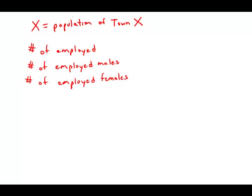In town X, 64% of the population are employed and 48% of the population are employed males. What percent of the employed people in the town are females? I'm going to write those percents as decimals. So 64% of the town is employed, that is .64 times X. 48% of the town are employed males, so that is .48 times X.